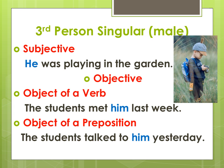Third person singular, male. As the subject: 'He was playing in the garden.' When it is objective — as an object of a verb: 'The students met him last week.' As an object of a preposition: 'The students talked to him yesterday.' So it is 'he' in the subject and 'him' in the object.